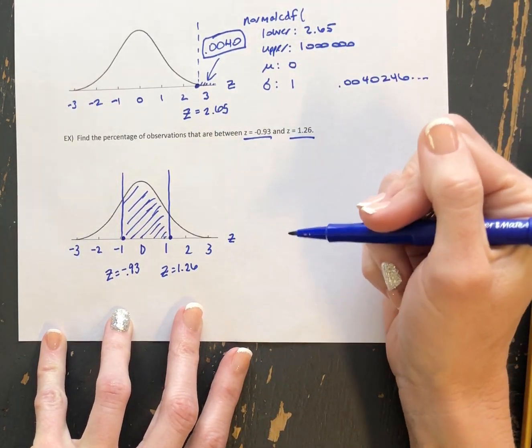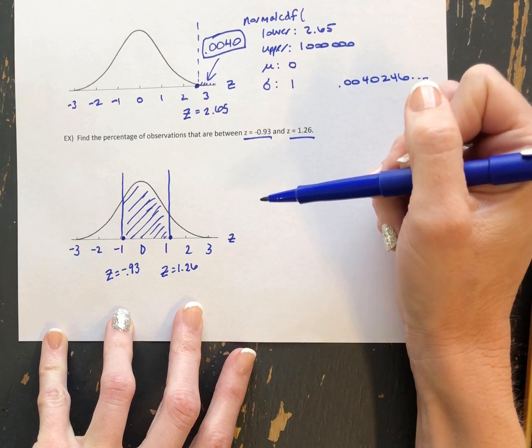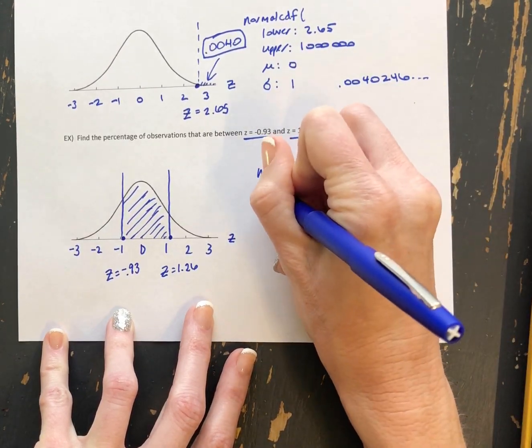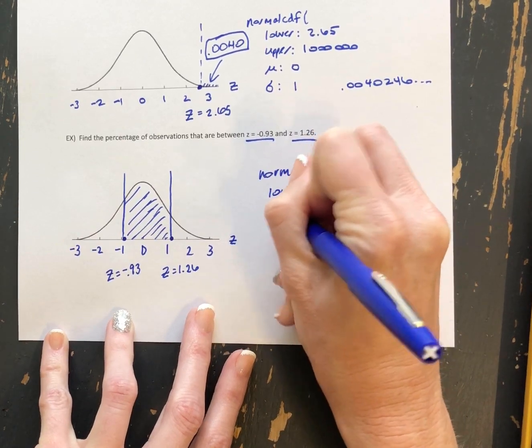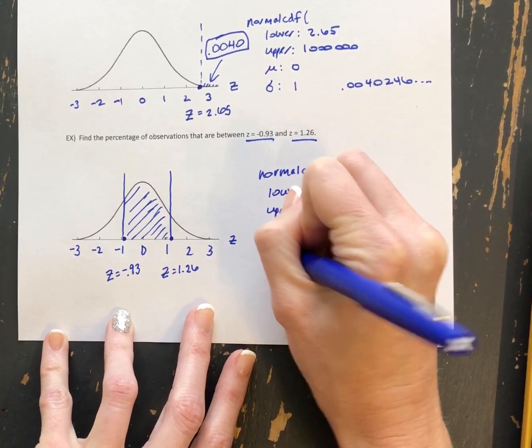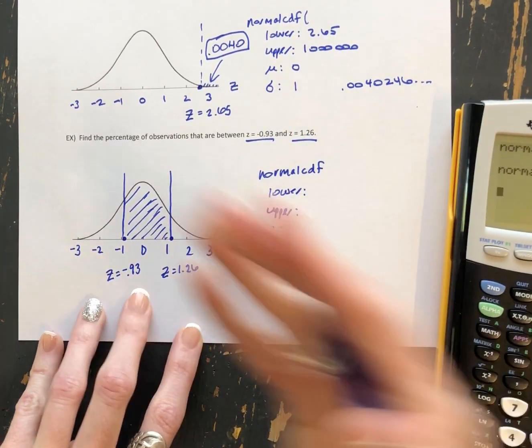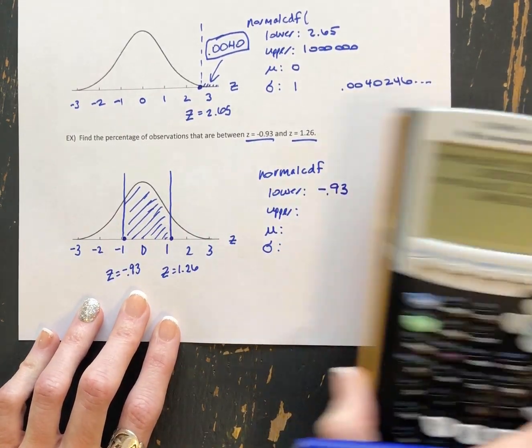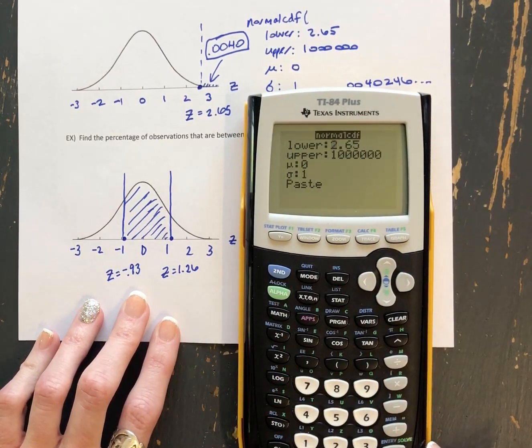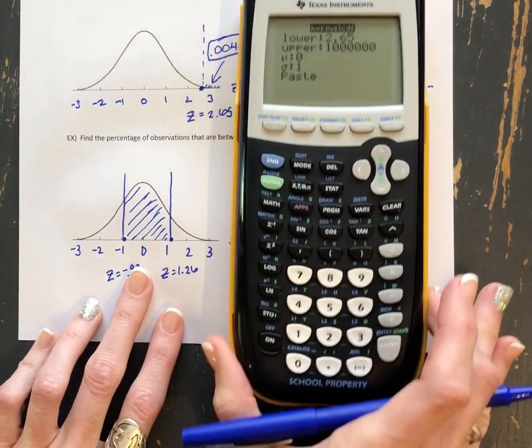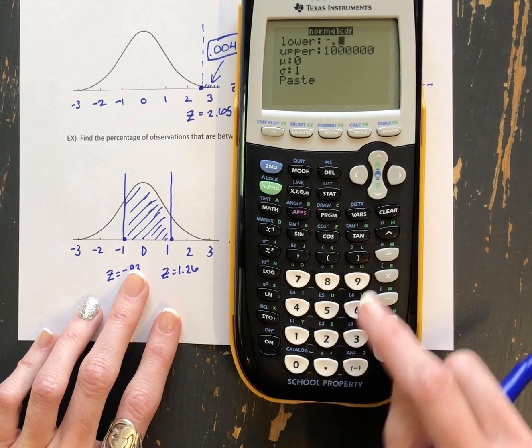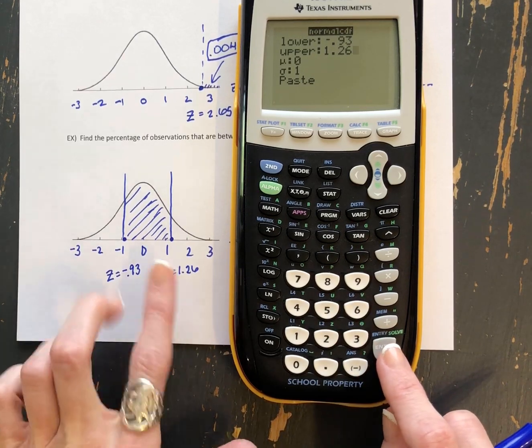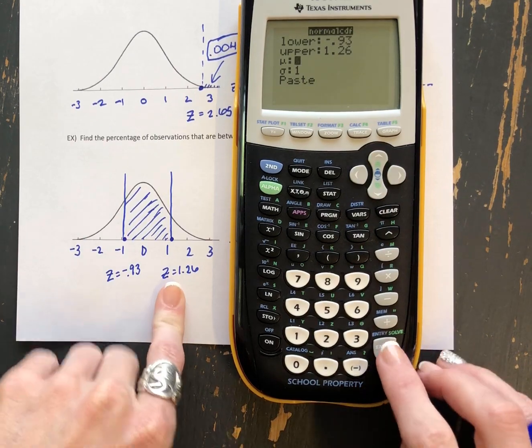So again, for all of these examples, we are given z-scores. We are trying to find areas. And when that's the case, we're using normal CDF. So our lower, upper, mean, and standard deviation. Lower, our leftmost value, where we want to start finding area, is negative 0.93. So as you're doing this, make sure that you are using the negative key along the bottom. So negative 0.93. Our upper is 1.26. That's where we want to stop finding area. Mean is still 0. Standard deviation is still 1.